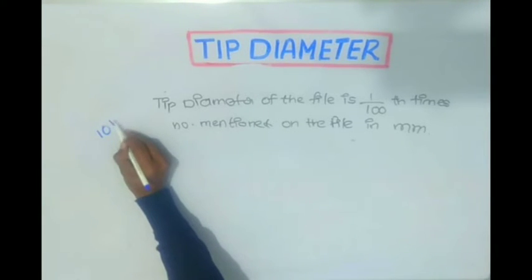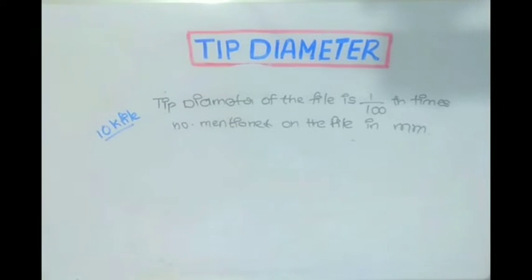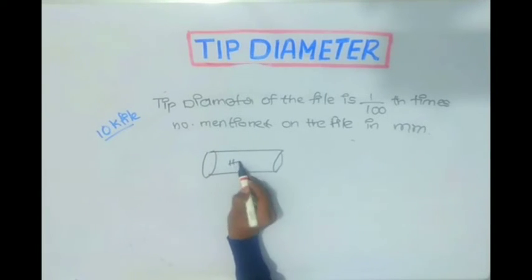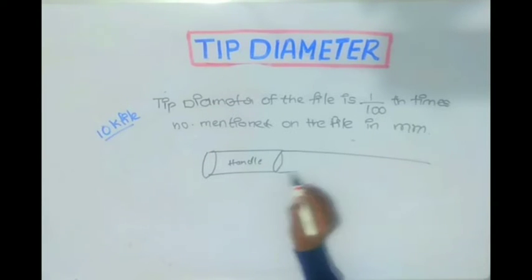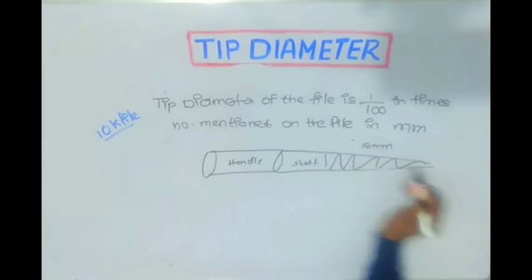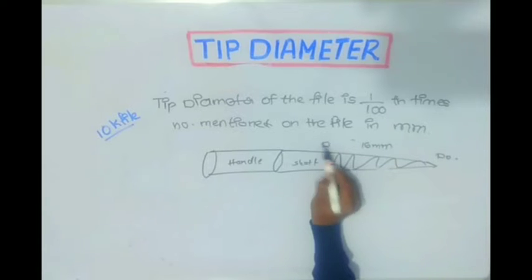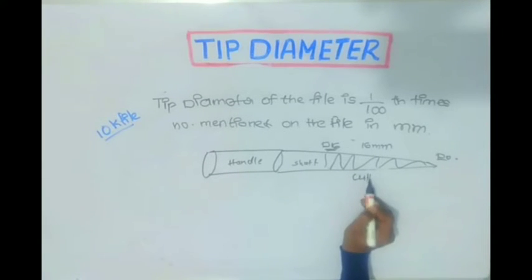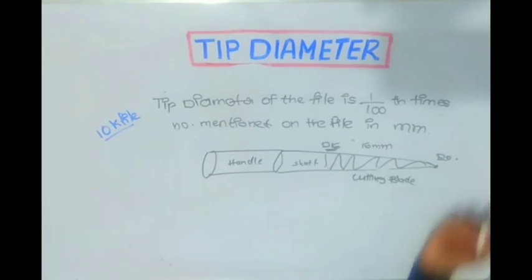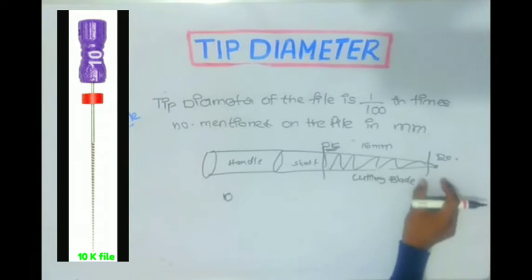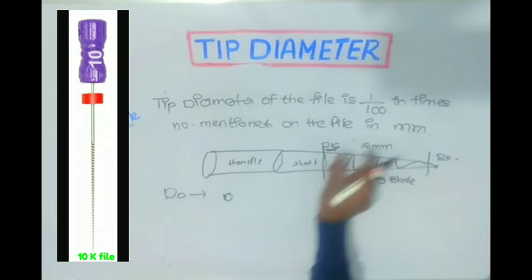When I say a number 10 K-file, what does it mean? Consider this is an endodontic K-file. This is the handle, this is the shaft, and this is the cutting blade — it is 16 millimeters. The tip diameter is denoted as D0, and at 16 millimeters it is represented as D16. The tip diameter, D0, is 1/100th times the number mentioned on the file, in millimeters.